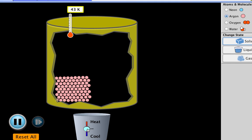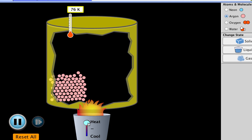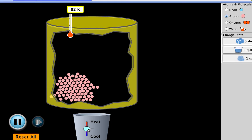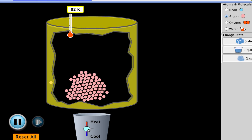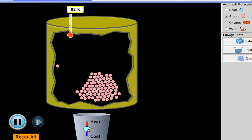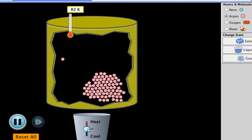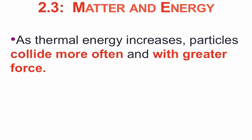I'm going to add thermal energy by heating this solid. Notice, as I do this, the particles begin to move more quickly. They also begin to hit into each other more frequently and with more force. And finally, they begin to spread out a little bit more. So what can we say about the relationship between matter and energy?